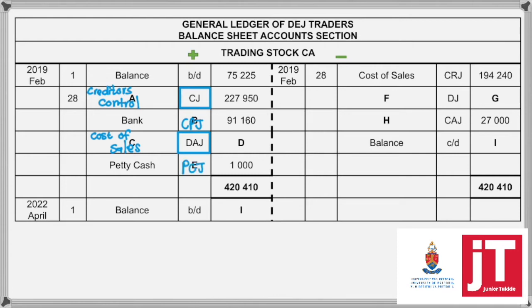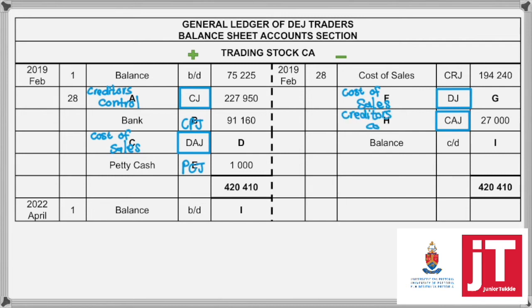Then continuing with the layout: Debtors' Journal is credit sales, so cost of the goods sold — so F must be Cost of Sales. And then CAJ is return of stock to our suppliers. Who is the supplier? The creditors. So, Creditors' Control.